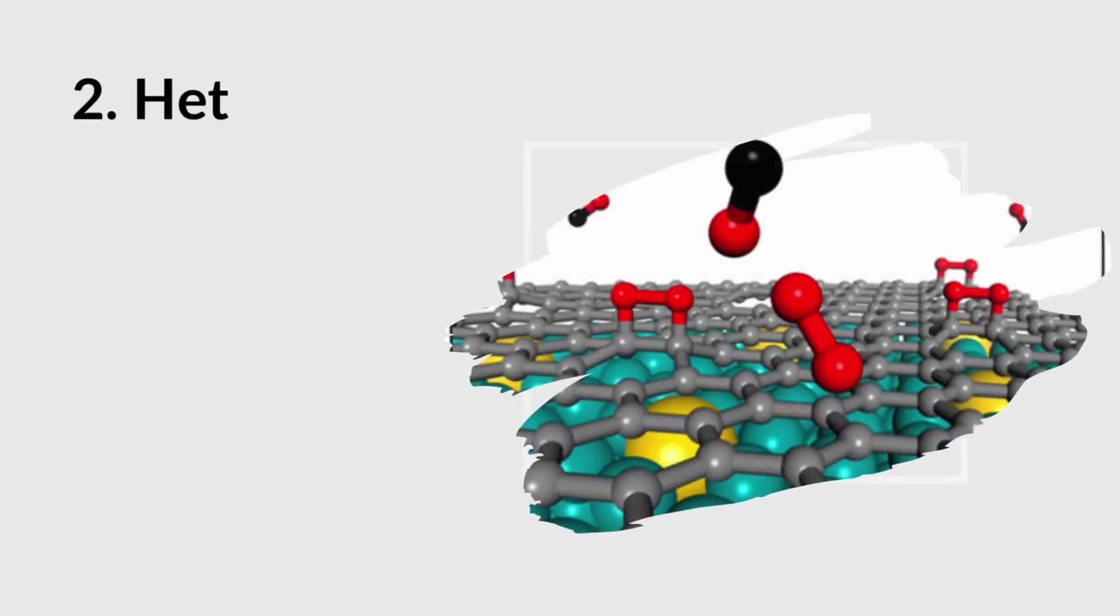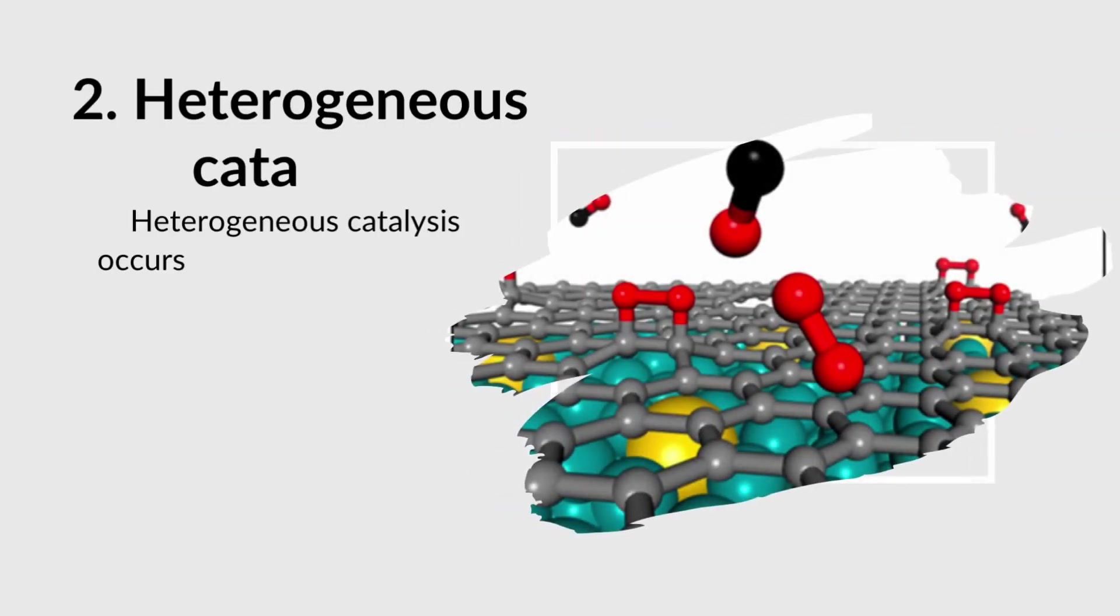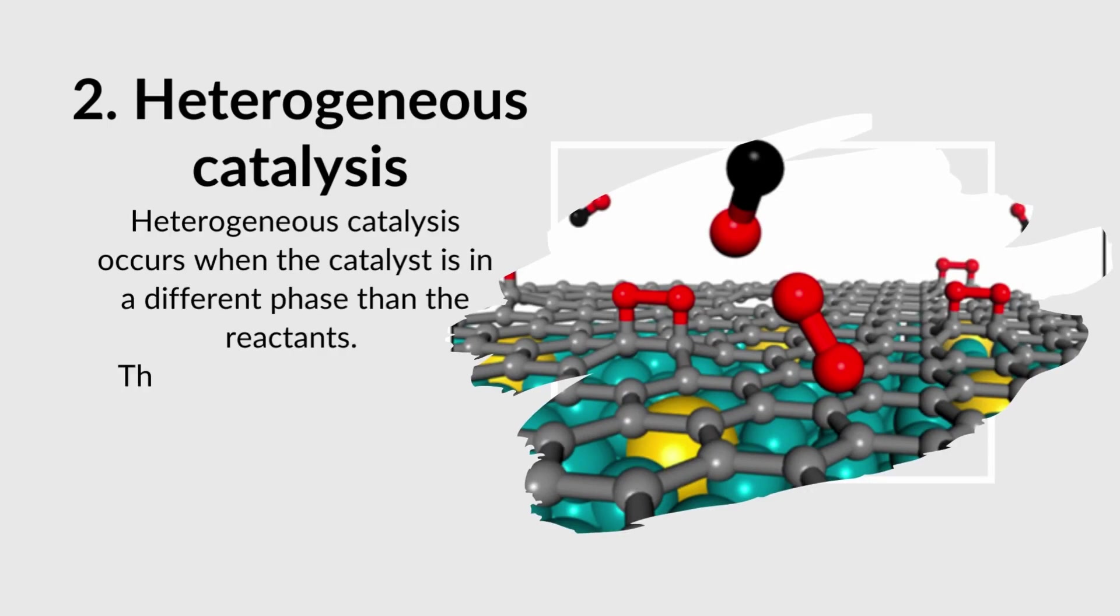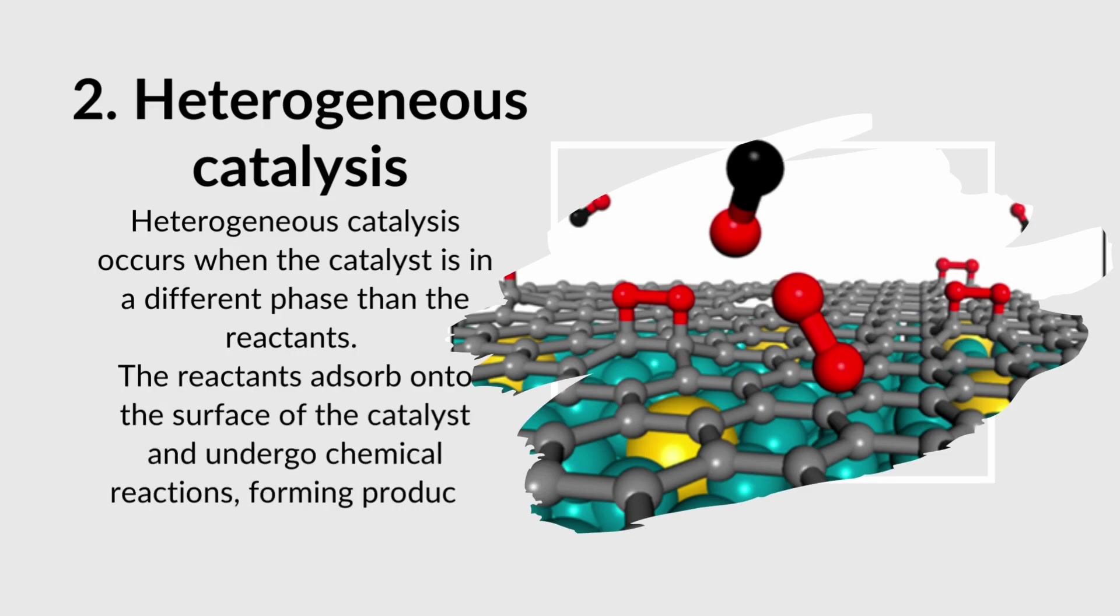Second type is heterogeneous catalysis. Heterogeneous catalysis occurs when the catalyst is in a different phase than the reactants. The reactants adsorb onto the surface of the catalyst and undergo chemical reactions, forming products that desorb from the surface.